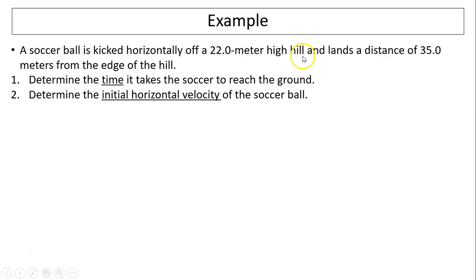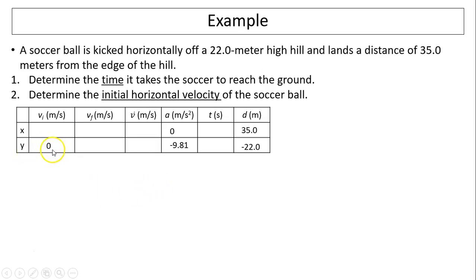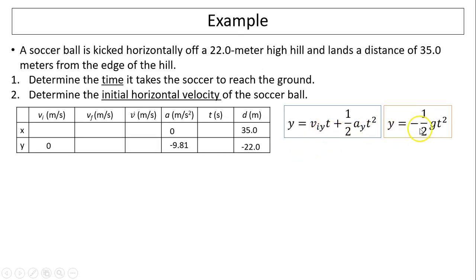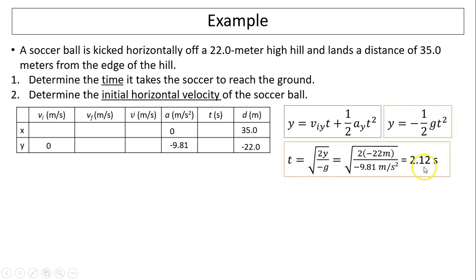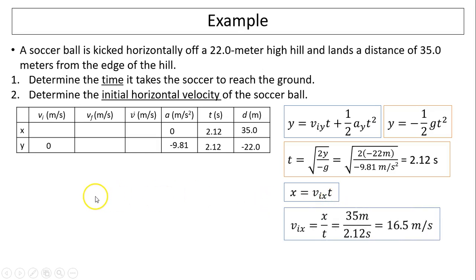Question two. A soccer ball is kicked horizontally off a 22-meter high hill, so y equals negative 22. It lands a horizontal distance of 35 meters from the edge of the hill. Initial vertical velocity equals zero since it's a horizontal projectile. Acceleration in x equals zero, acceleration in y is negative 9.81. Using y equals negative one-half g t squared, t equals 2.12 seconds. Then using x equals Vix times t, the initial horizontal velocity Vix equals 16.5 meters per second — which is also the final and average velocity since horizontal velocity is constant.